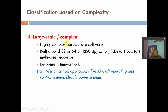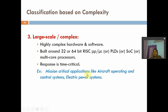Third one is large scale or complex. These are highly complex hardware-software systems. Here we use 32 or 64-bit RISC processors, PLDs, or SOCs and multi-core processors. RISC stands for reduced instruction set computers. Almost all smartphones and tablets use RISC processors. PLDs include CPLDs and FPGAs, and SOC means system on chips. These are responsible for time-critical tasks. Examples include aircraft operating and control systems, and electrical power systems.